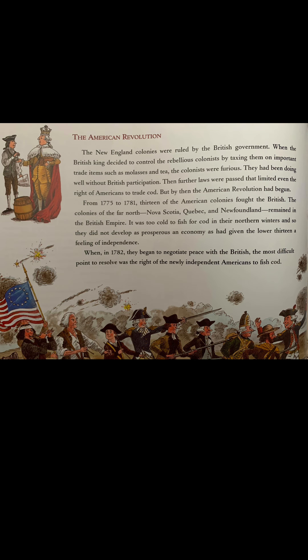The American Revolution. The New England colonies were ruled by the British government. When the British king decided to control the rebellious colonists by taxing them on important trade items such as molasses and tea, the colonists were furious. They had been doing well without British participation. Then further laws were passed that limited even the rights of Americans to trade cod. But by then, the American Revolution had begun.